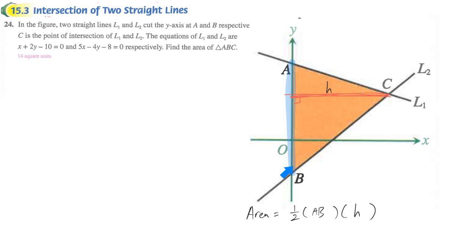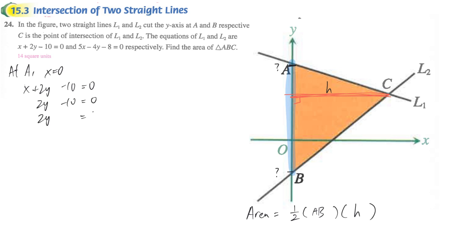Now we need to work on AB. We just focus on point A — we can get the position, that means the Y-intercept. At point A, which lies on L1, X is equal to 0. That's how you find out the intercept point. So we copy down L1: substituting X=0, 2Y minus 10 is left. We can easily find out that Y is equal to 5. That means the height here is 5.